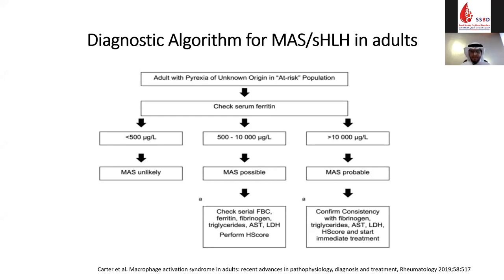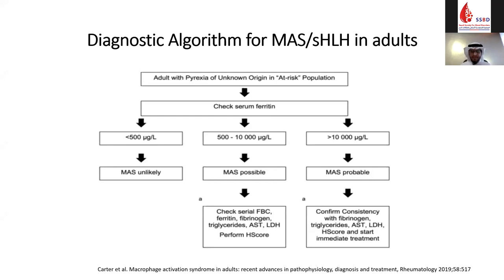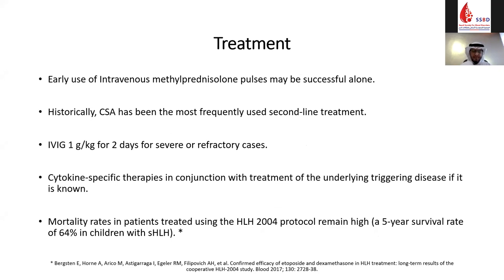Ferritin studies have found that the maximum serum ferritin level during secondary HLH and a fall of less than 50% after treatment was associated with higher mortality. A single-center retrospective review found ferritin more than 10,000 to be 96% specific and 90% sensitive for diagnosing HLH in a timely manner. Ferritin-to-ESR ratio has also been found to increase specificity for diagnosing MAS. Treatment: the cornerstone is high-dose corticosteroids, using intravenous methylprednisolone pulses, which may be sufficient alone for mild disease. Historically, cyclosporine is the most frequently used second-line treatment, and IVIG may be added for severe or refractory cases.